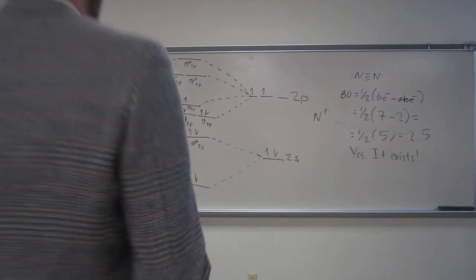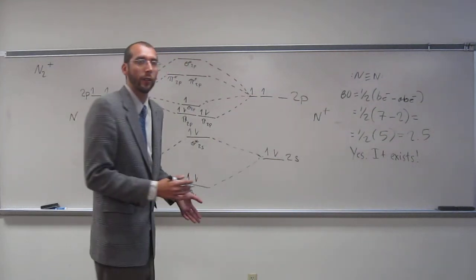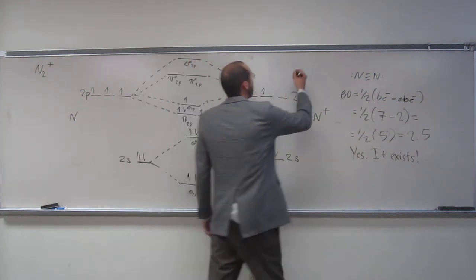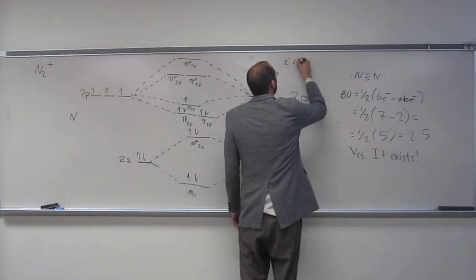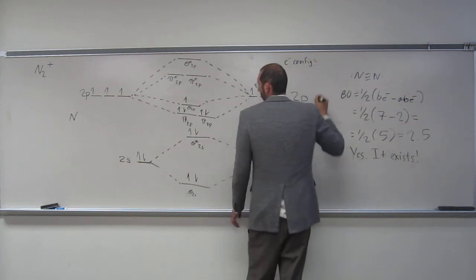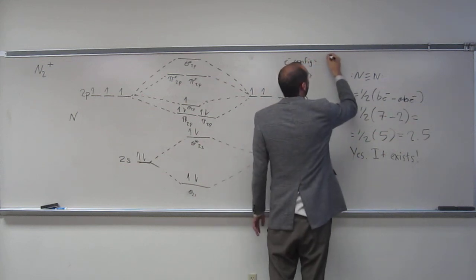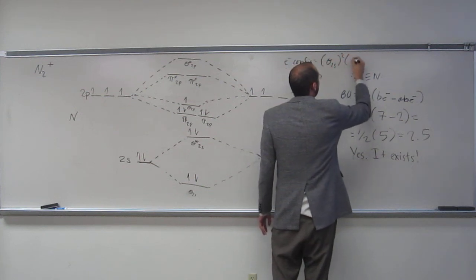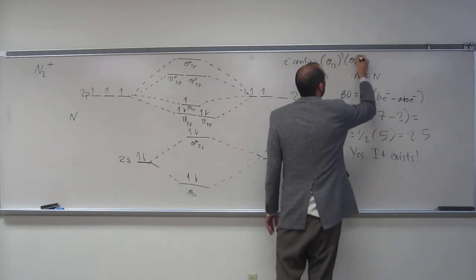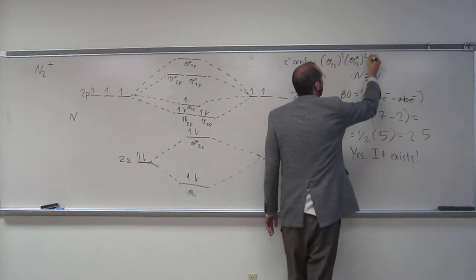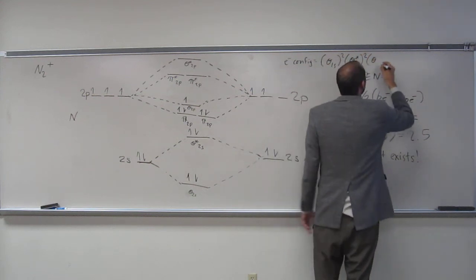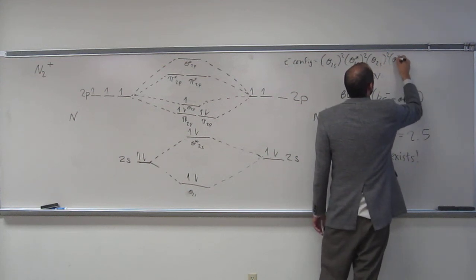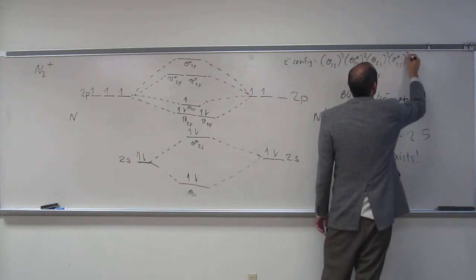Last thing I'd like to do is do the entire electron configuration. So remember stars on the bottom: sigma 1s two, sigma star 1s two, sigma 2s two, sigma star 2s two.